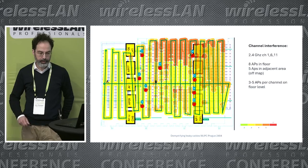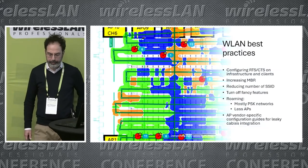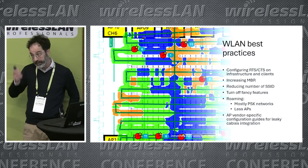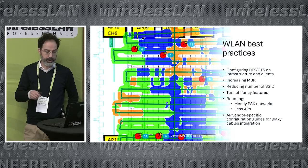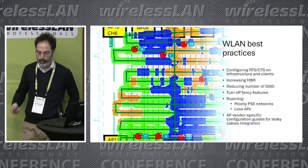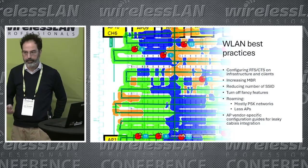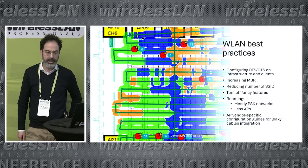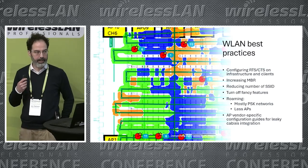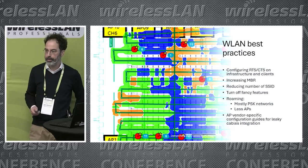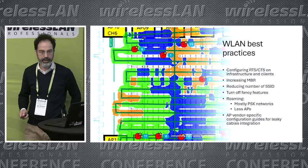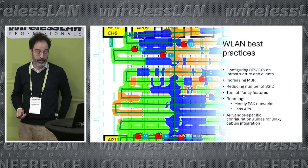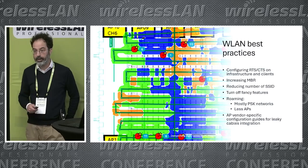To tackle retransmissions and protection issues: RTS and CTS configuration best practices, SSID reduction, and more spectrum efficiency are recommended. There are vendor-specific configuration guides for optimization with leaky cable installations. The key question then is: how can we design for leaky cable networks using existing commercial tools? Unsurprisingly, it turns out we cannot — so Miki resorted to designing and coding his own simulation tool for leaky cable installations.